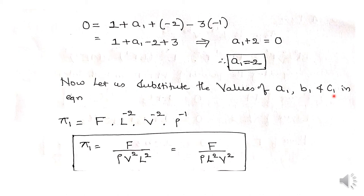Substituting A1 = -2, B1 = -2, C1 = -1 into the pi 1 equation gives pi 1 = F · L⁻² · V⁻² · rho⁻¹, which can be written as pi 1 = F / (rho · L² · V²). This is the final expression for the pi 1 term.